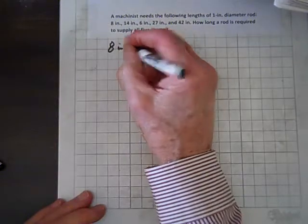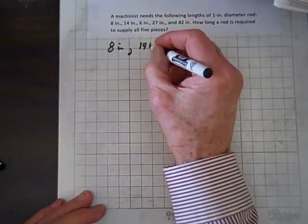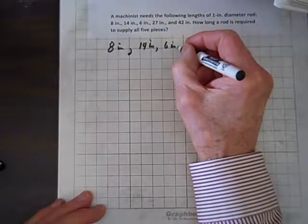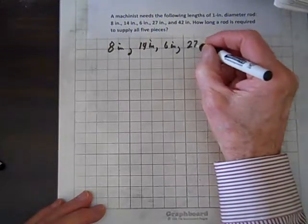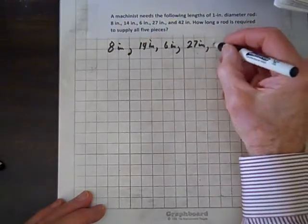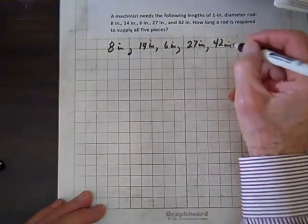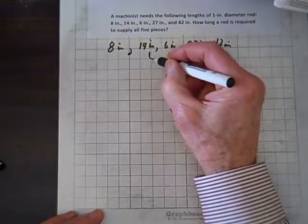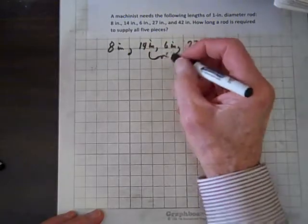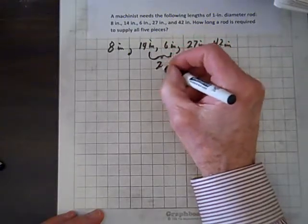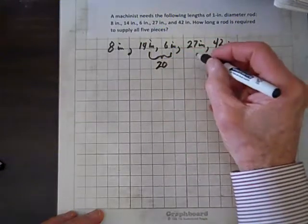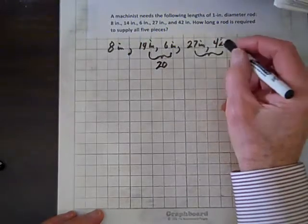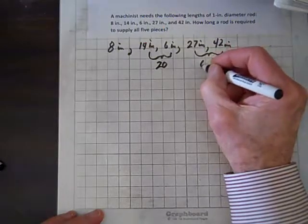8 inches, 14 inches, 6 inches, 27 inches, and 42 inches. And so, there's any number of ways to do this, but a fun way I find is, look, 14 and 6, that's 20. Anytime you add 4 and 6 you get 10, so 14 and 6 is 20, so that's an easy combination. And let's see, we can combine these two. So 20 and 40 is 60, and 7 and 2 is 9, so that must be 69.